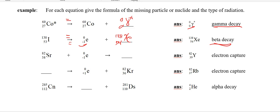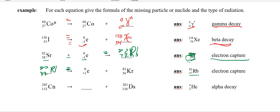Next example: electron is a reactant, so we know we're doing electron capture. Put the equal sign on the product side. No change in mass — that's 82. Atomic number: 38 plus negative one is 37, and that is rubidium. Then rubidium goes on to do positron emission.